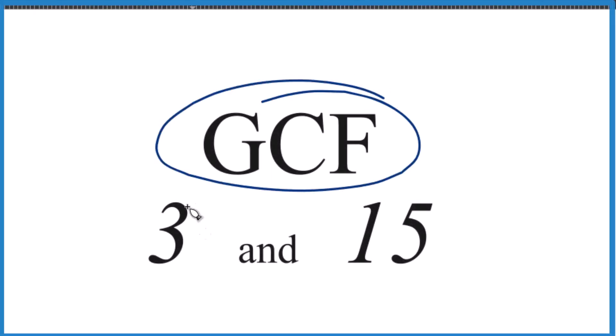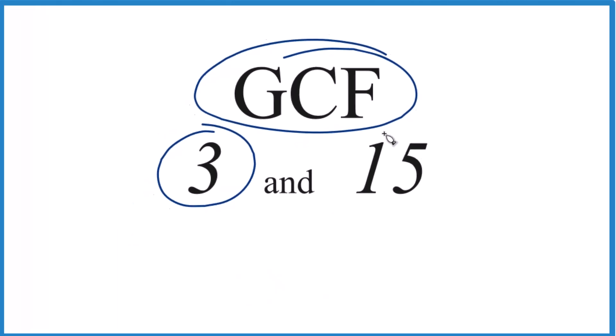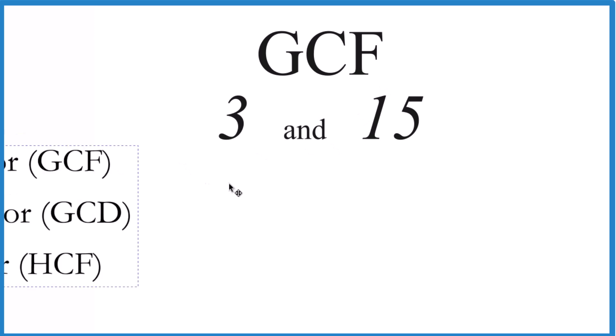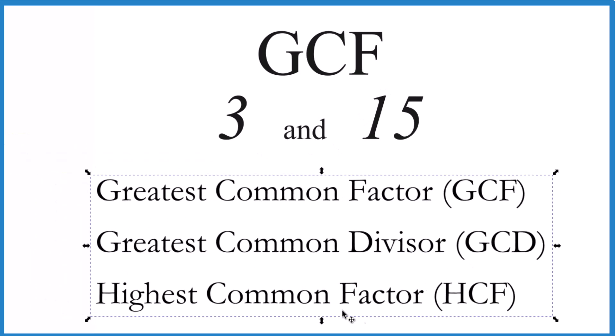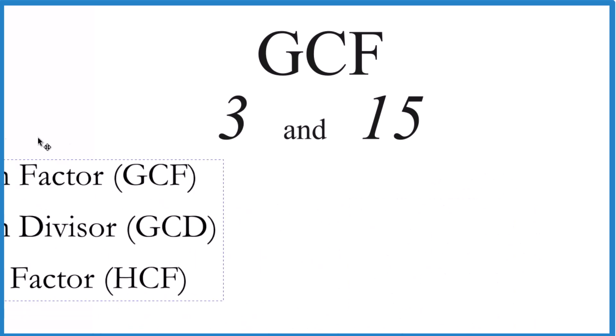Okay, the GCF for 3 and 15, that's the greatest common factor. The GCF is also called the greatest common divisor or the highest common factor. These are the same thing, so let's find the GCF for 3 and 15.